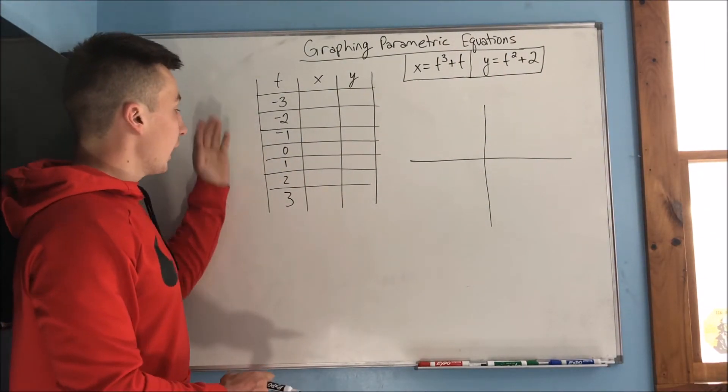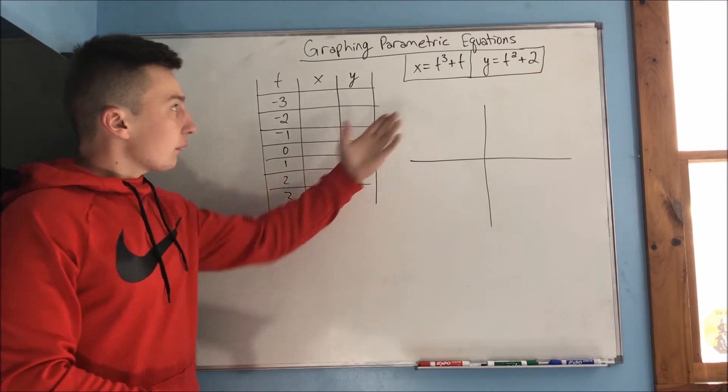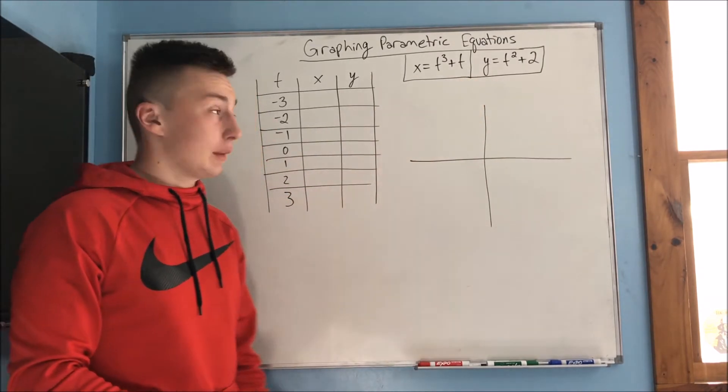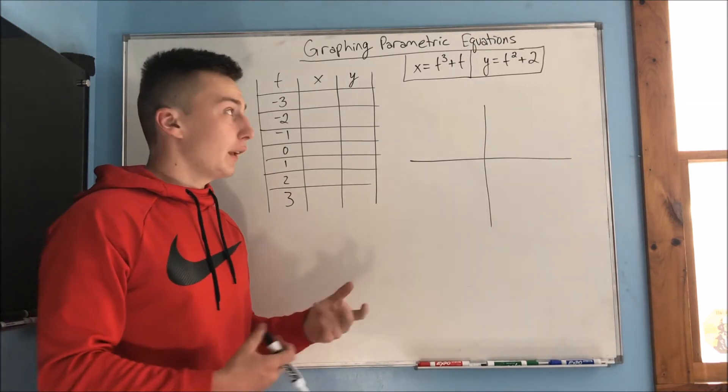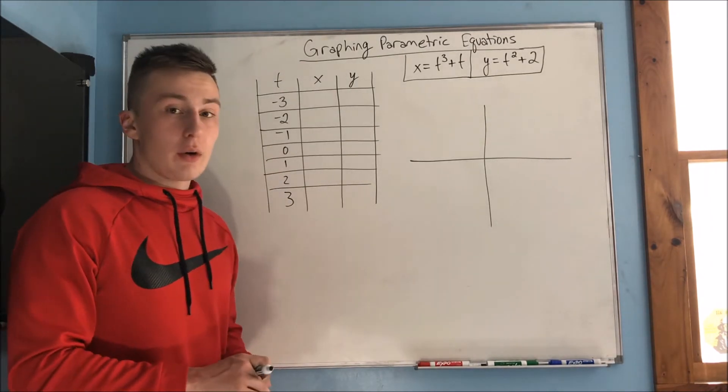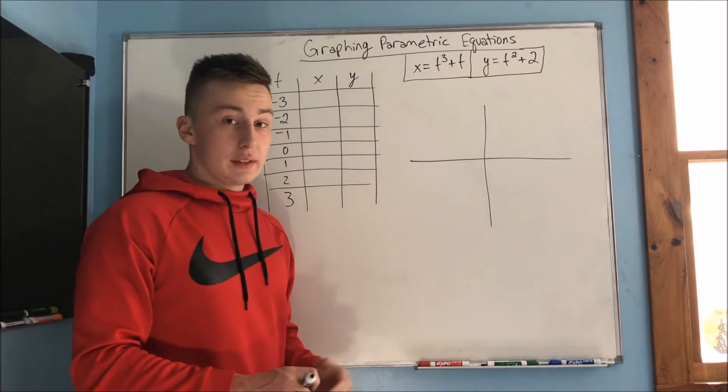Alright, so we have one more example up on the board here. This time, we're going to go from negative 3 to 3. And we have our parametric equations up here. Go ahead and try to fill out this table right now, so you're comfortable with filling it out, just graphing parametric equations. And yeah, I'll see you then.